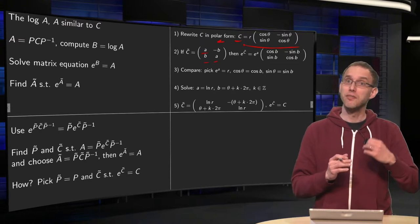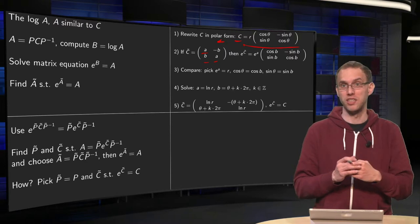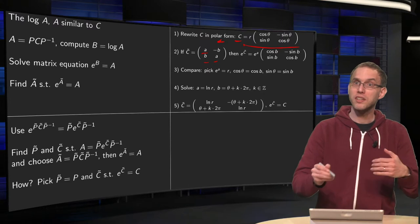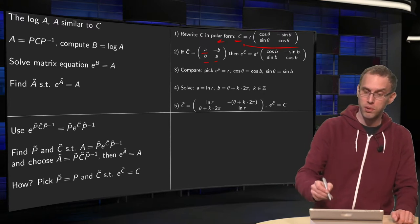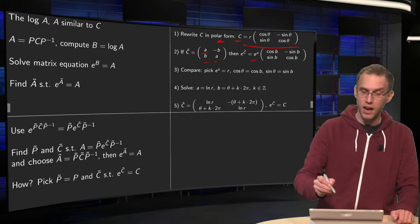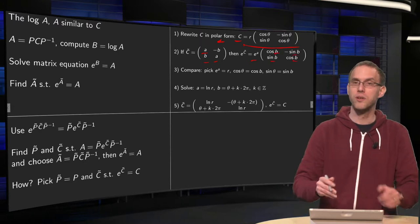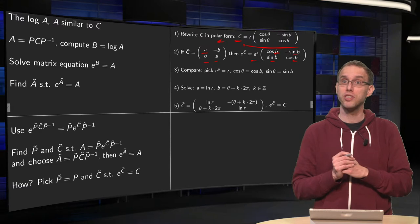Well, why is that? If you now compute the exponent of your C̃, so e to the power of C̃, what do you get? You use this Euler type of formula, you get e to the power of A, and with the B's you set in the cosine and in the sines, so that is how you compute e to the power of C̃.